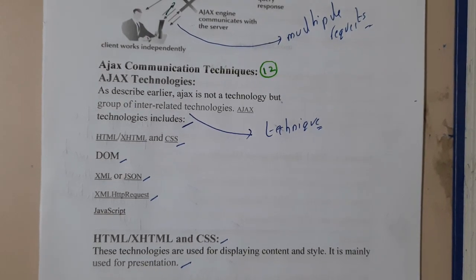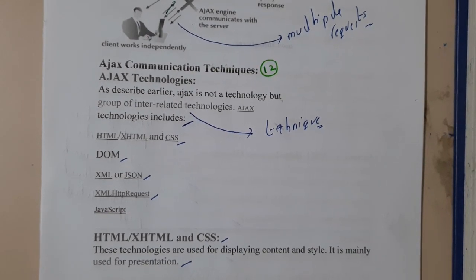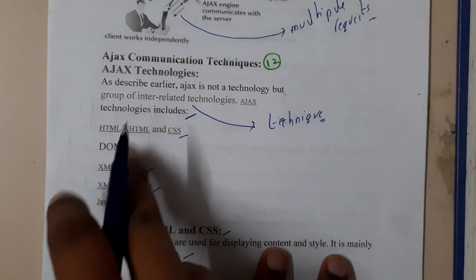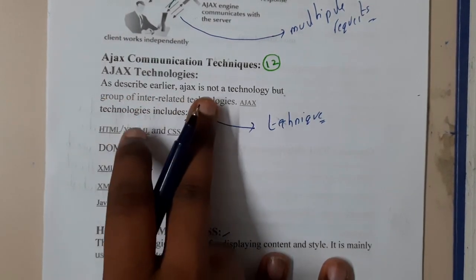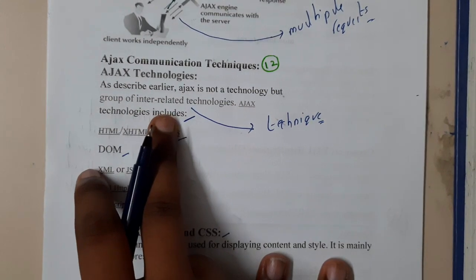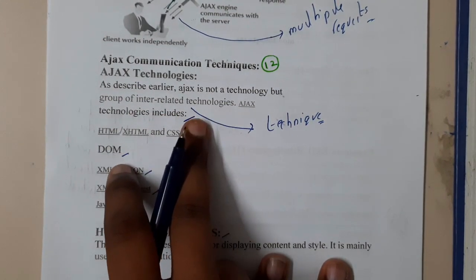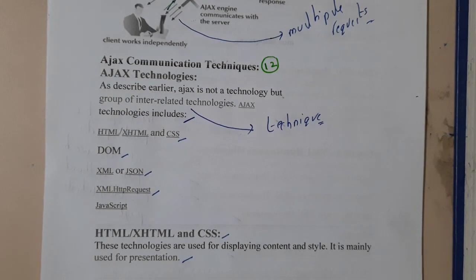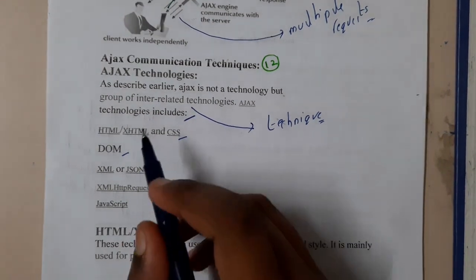Hello guys, we are back with our next lecture. In this lecture, let us go through AJAX communication techniques — what files and methods it will be using. AJAX, as I described earlier, is not a technology but a group of interrelated technologies. Basically, AJAX is a combination of a few technologies which we learned till now.